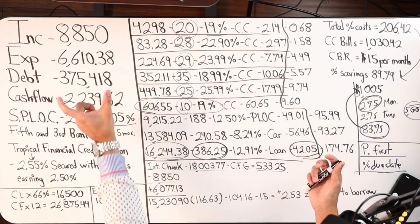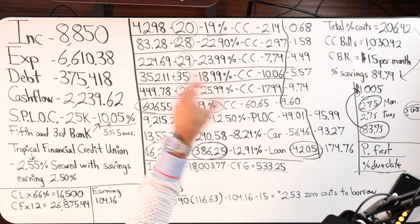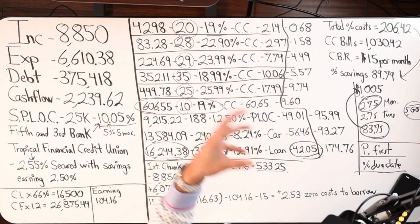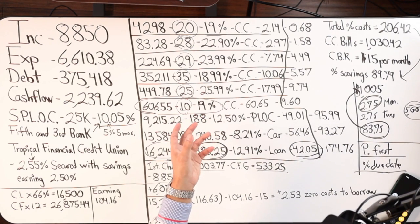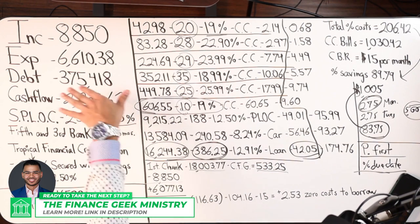You see, when you guys put your total debt owed, you're putting principal owed. What you're not putting is interest. That's the unforeseen number. That's the invisible number that we don't see. So in reality, $375,418 is not what this client owes.